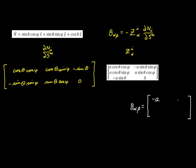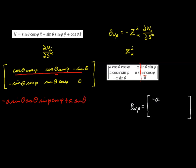The first row, second column is the sum of products of this row and the second column. We get negative a sine theta cosine theta sine phi cosine phi, then positive a sine theta cosine theta sine phi cosine phi, and the last term is zero. These terms are identical but opposite in sign, so the result is zero.